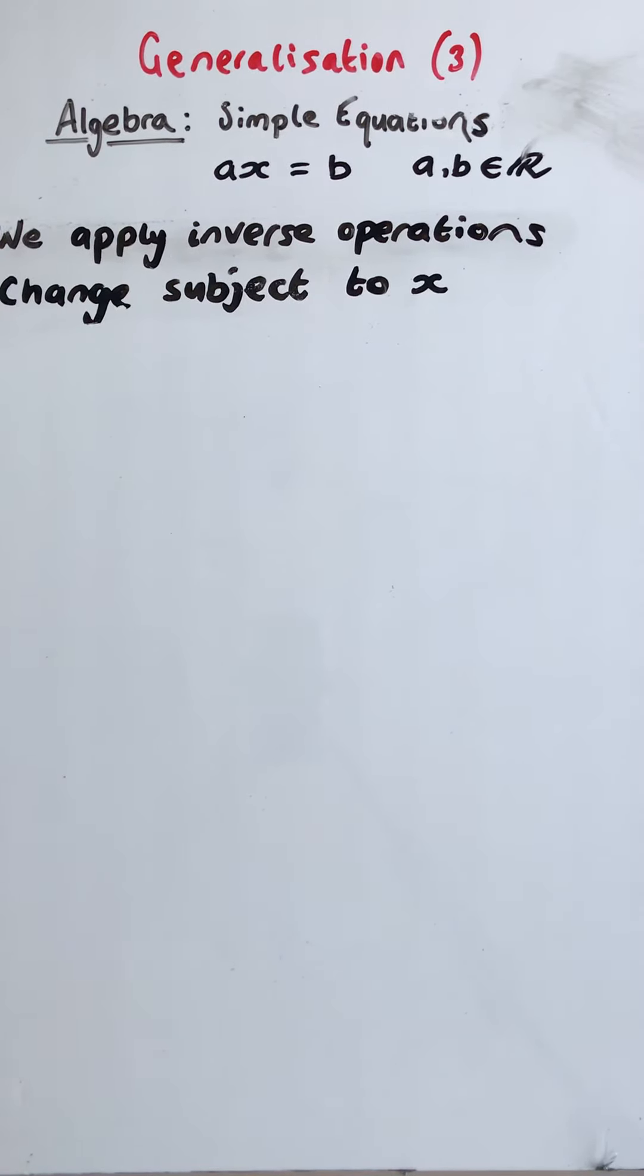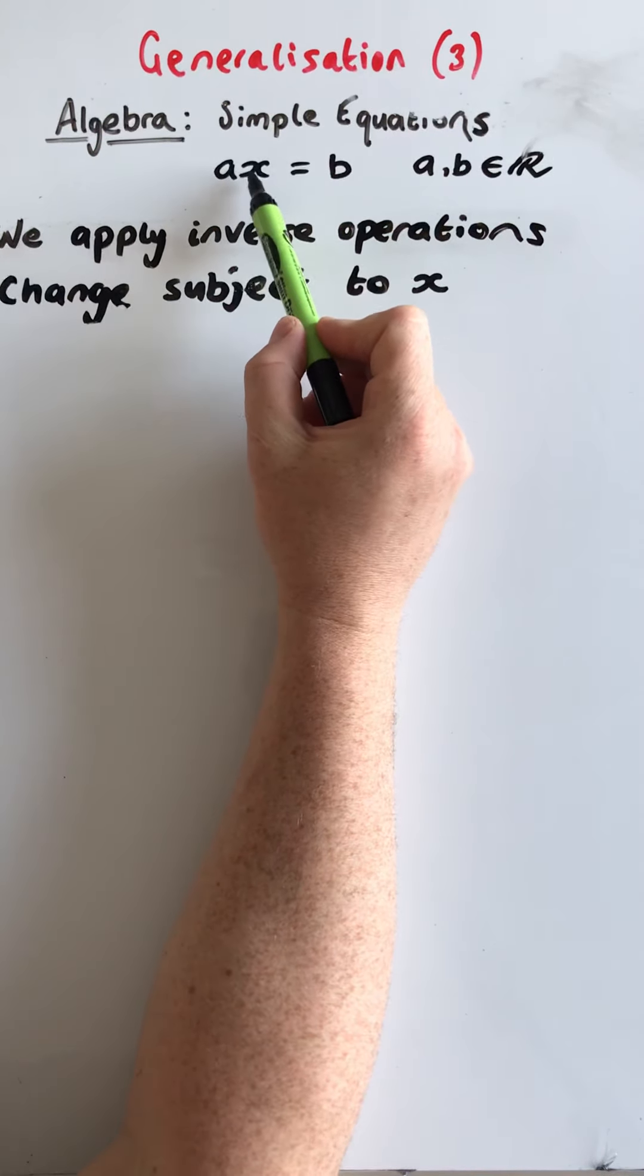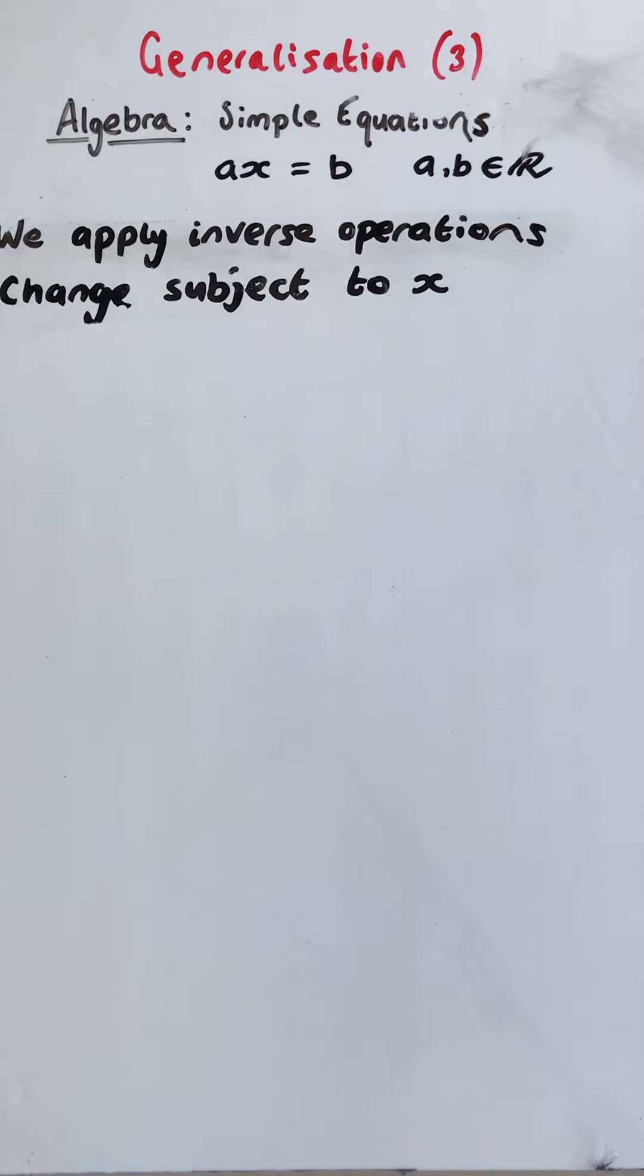Welcome on to another lesson with Mr Burns. In this lesson we are going to generalise this simple equation which takes the form ax equals b where a and b are members of the real numbers.